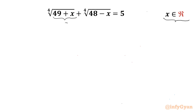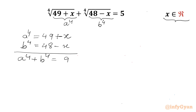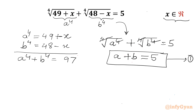I will consider the radicand (49 plus x) equal to a to the power 4, and the radicand (48 minus x) equal to b to the power 4. So we have: a⁴ = 49 + x and b⁴ = 48 − x. Adding both equations gives a⁴ + b⁴ = 97. From the original substitution equation, 4th root of a⁴ plus 4th root of b⁴ equals 5, so a + b = 5. Let us call this equation 1 and the sum equation 2.